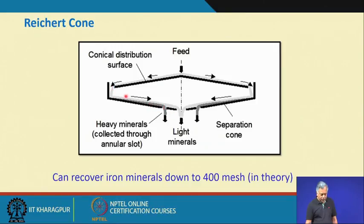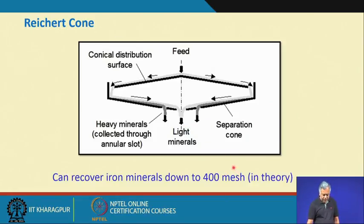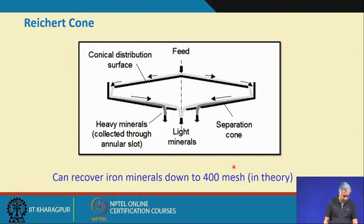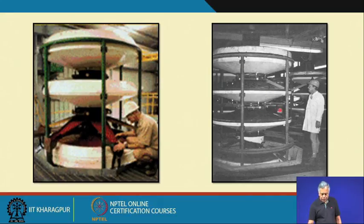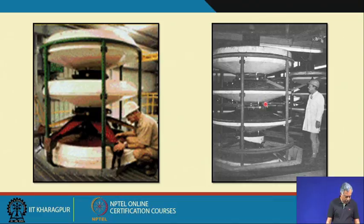When the lighter stream is collected at the top we collect light minerals, and the bottommost fraction is the heavy minerals. This can work up to 400 mesh in theory. These are some designs of various flowing film concentrators — versions of modified recut cones or recut cones themselves.